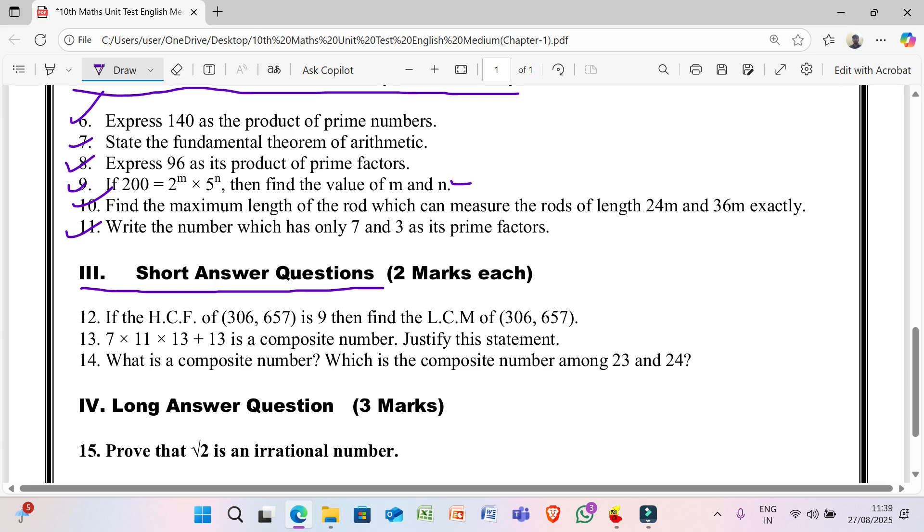Question number 3rd, short answer type questions, 2 marks each. 12th: if the H.C.F. of (306, 657) is 9, then find the L.C.M. of (306, 657). 13th question: 7 × 11 × 13 + 13 is a composite number. Justify this statement.